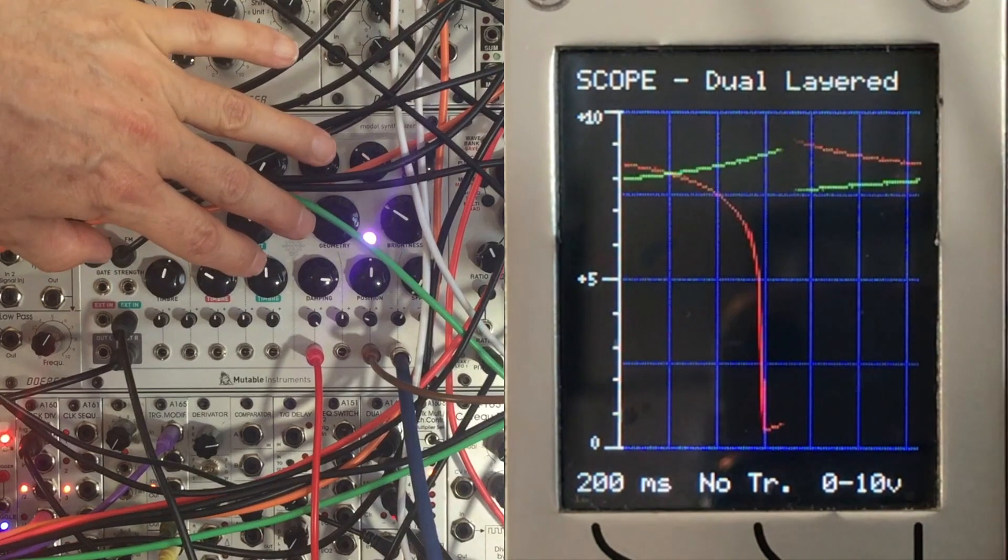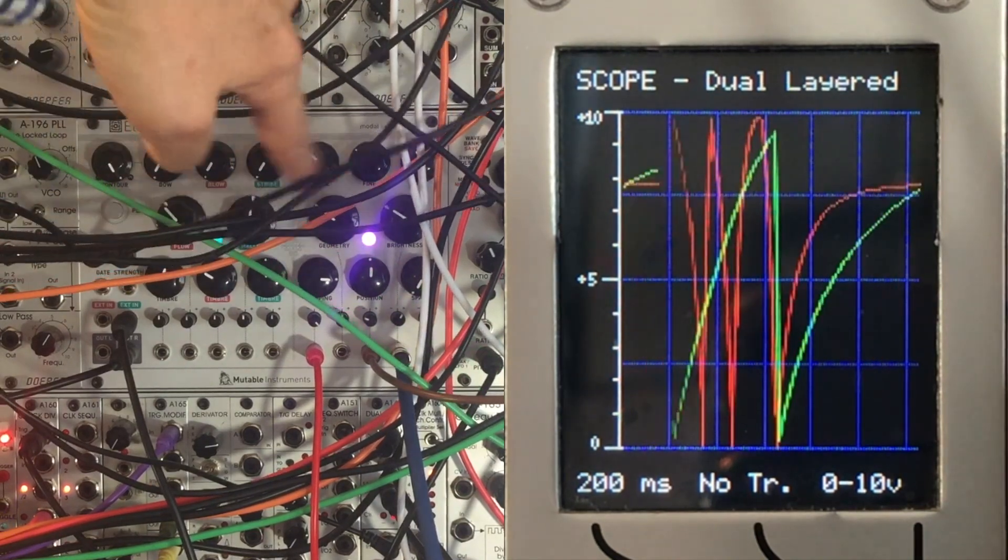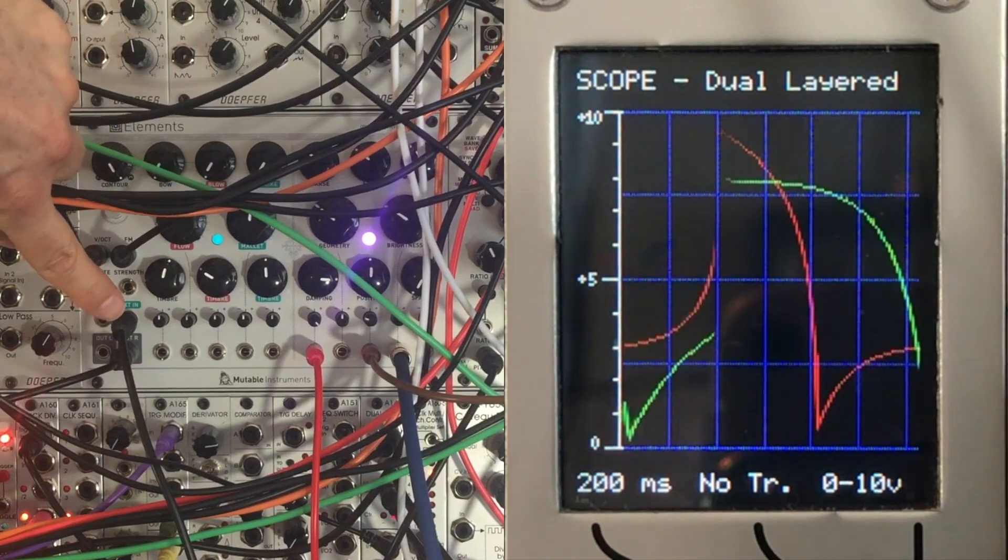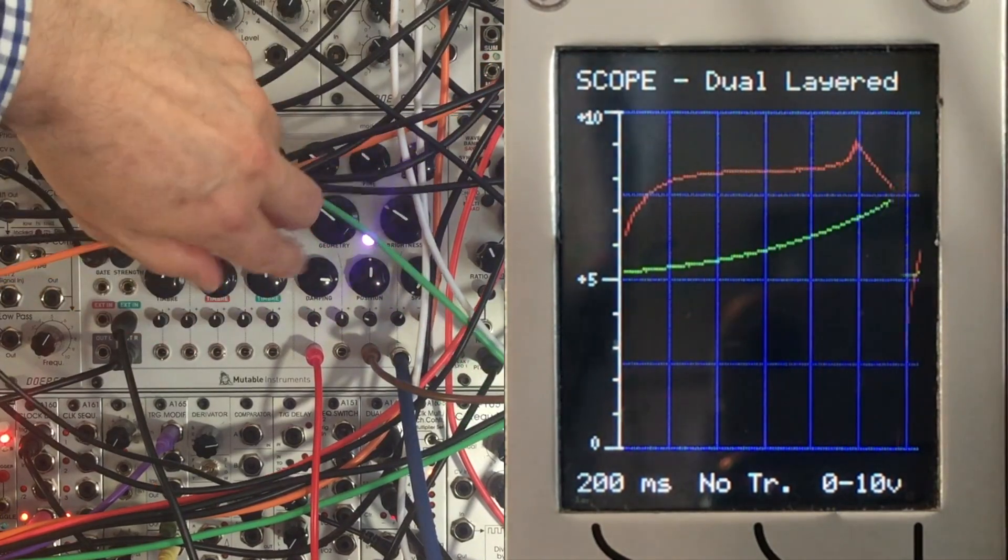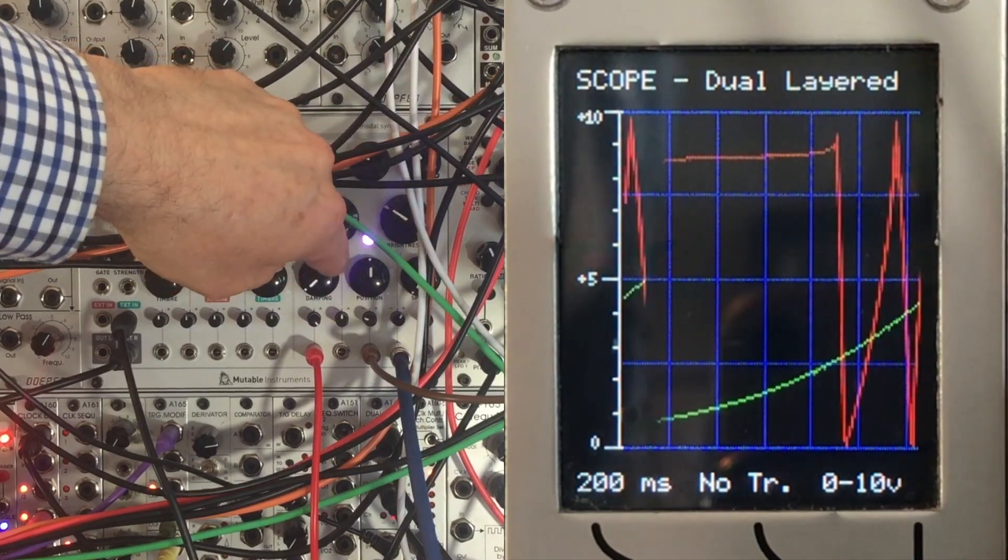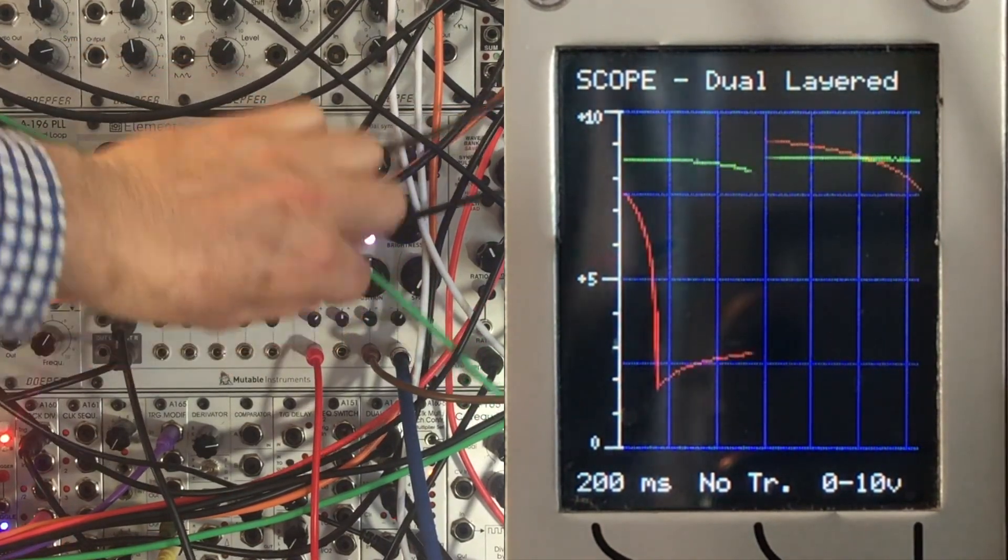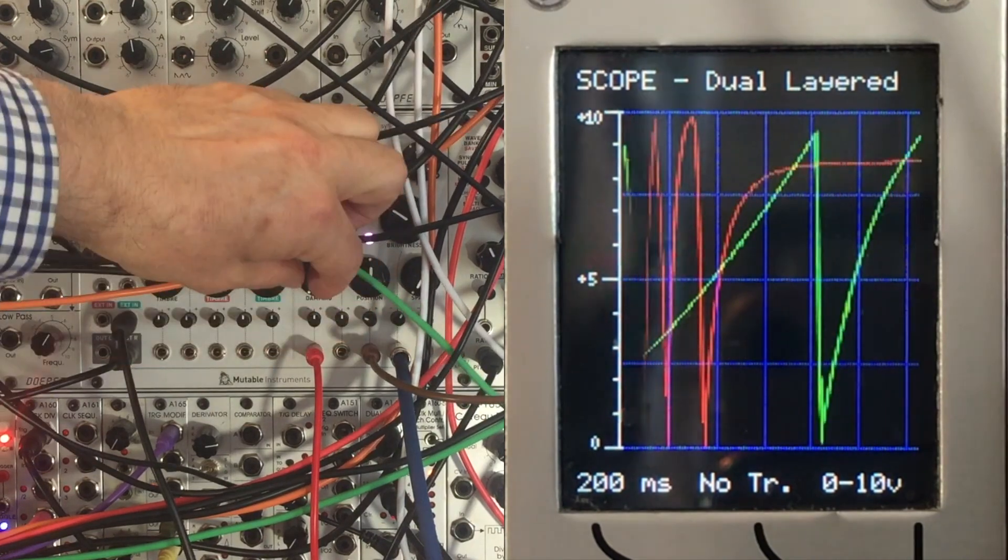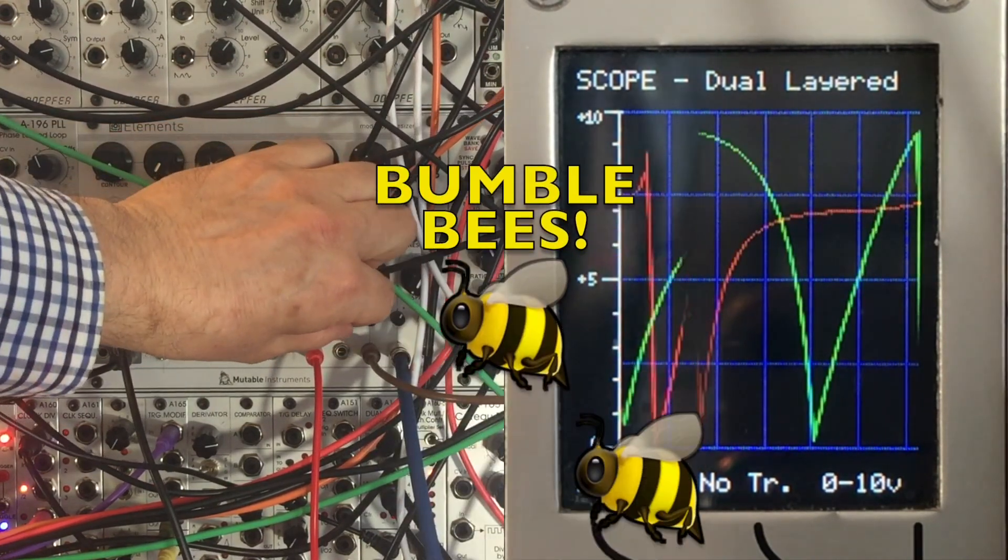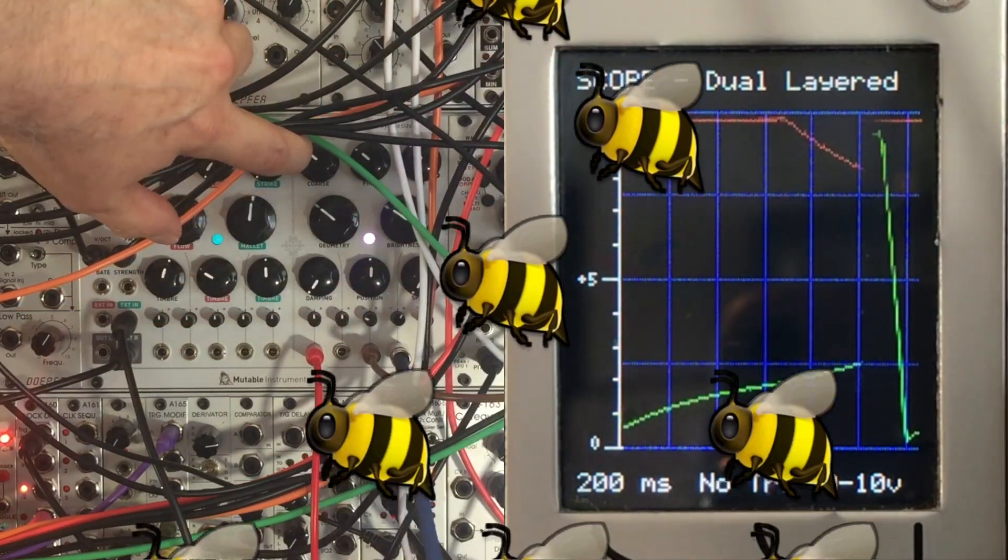And then by keeping the damping control fairly high, Elements will resonate at the frequency set by its own oscillation but excited by what's coming from the Z3000. And if I turn our damping off completely, we might hear the Z3000.